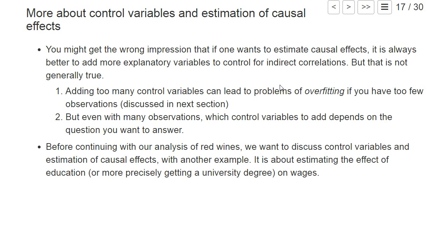There are two reasons why you may not want to add control variables. The first is that if you don't have a lot of observations, adding too many control variables can lead to problems of overfitting. We will discuss this in the next section when we look at machine learning in a pure prediction problem. The same overfitting problems can also be problematic if you want to estimate causal effects.